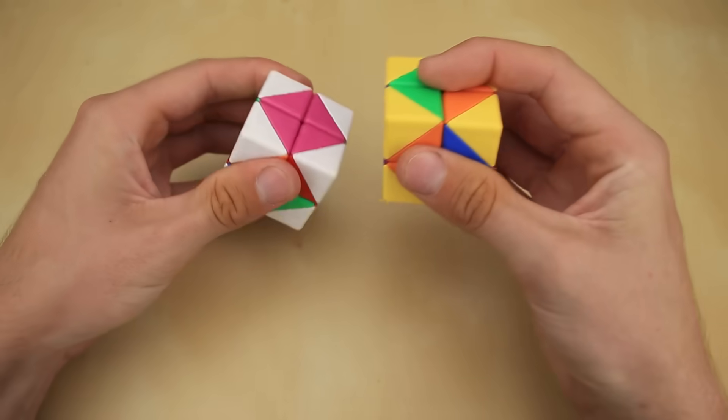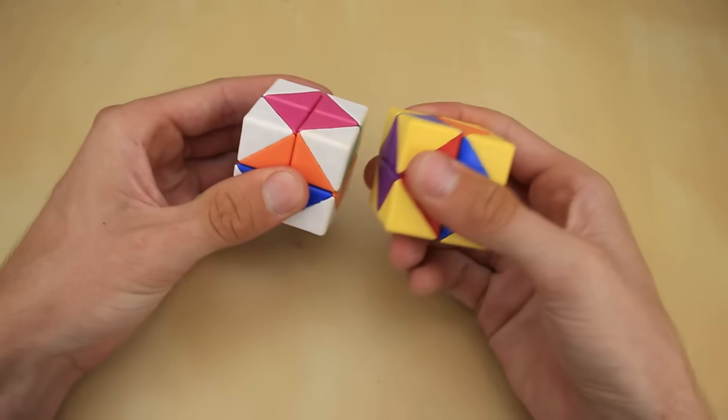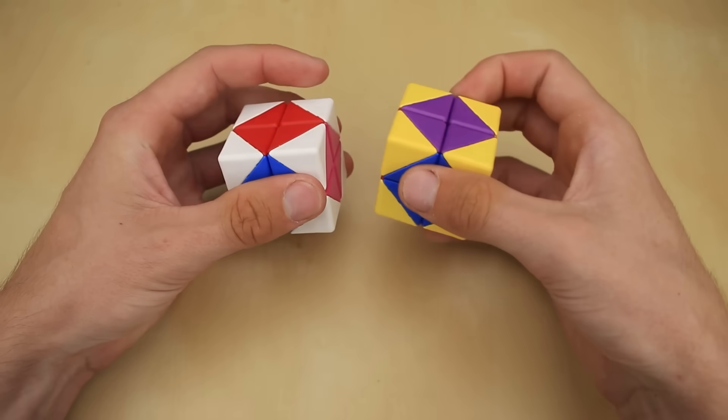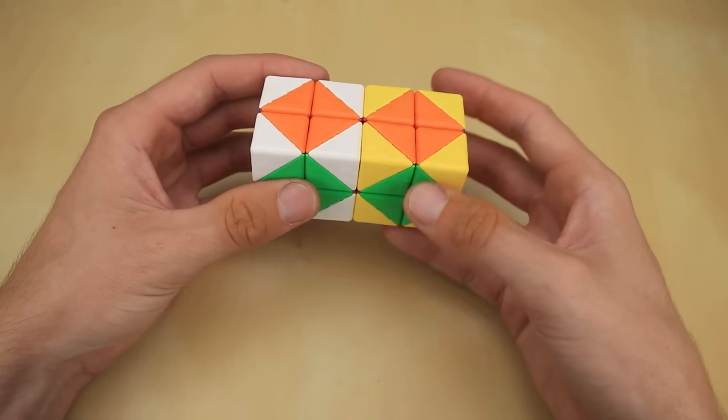So here we have our very pretty checkerboard. Basically, the way I remember it is we just do a U move, and then we undo that checkerboard pattern. And then finally, we can undo that turn, and then magically the double move has gone away, and we can go ahead and solve our puzzle. There we go.